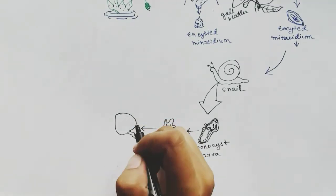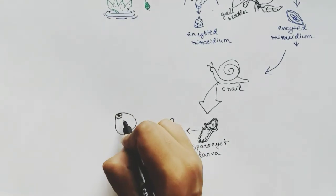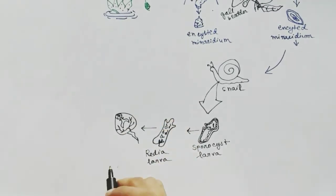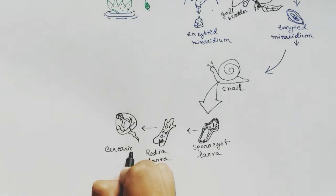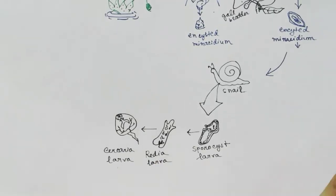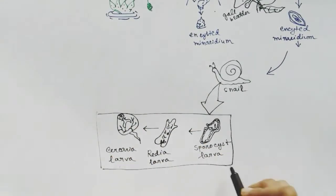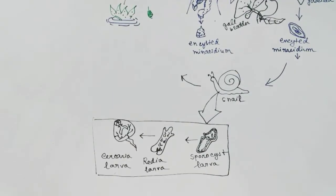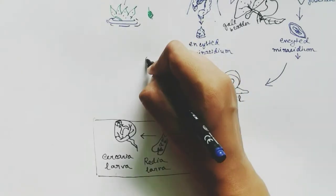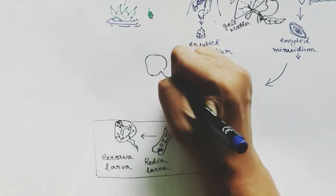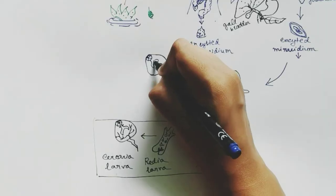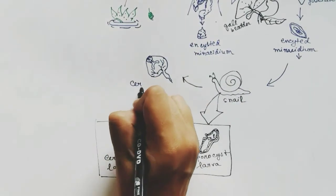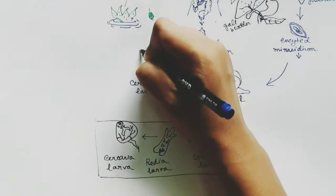After the redia larva, another kind of larva is formed — the cercaria larva, which looks like this. After formation of the cercaria larva, it leaves the body of the snail and through the water it reaches the water plants.